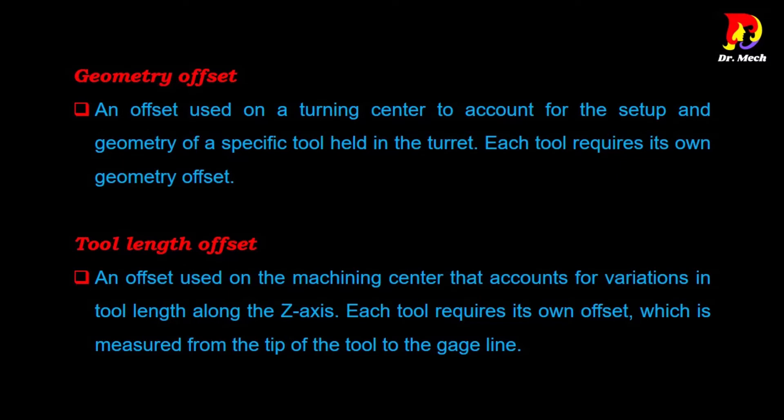Geometry offset is an offset used on a turning center to account for the setup and geometry of a specific tool held in the turret. Each tool requires its own geometry offset. This offset is set while setting up each tool. After that, this offset does not need to be changed until the specific production job is complete. You take a new geometry offset when the specific job is completed because the workpiece length may vary.